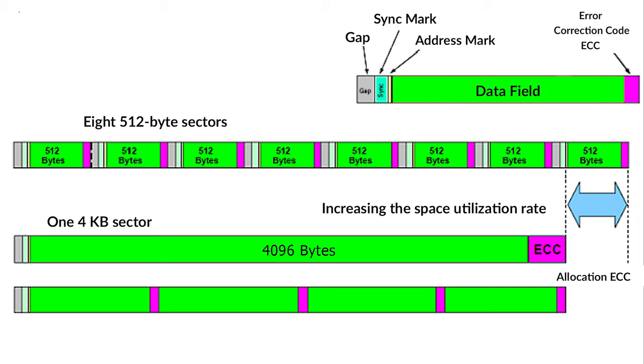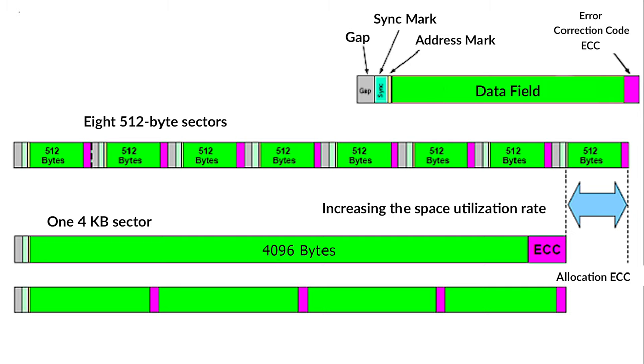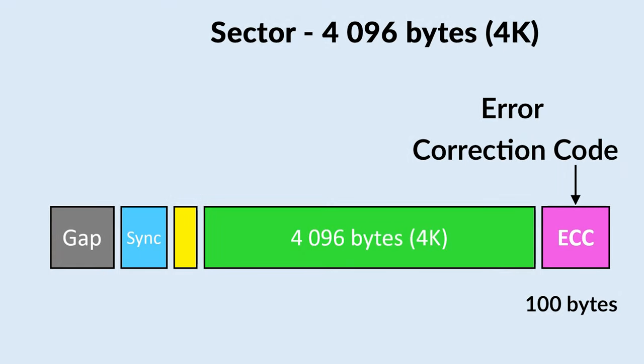In addition, larger sectors strengthen the integration of error-correction algorithms, which can help maintain data integrity at higher storage densities. In 4K sectors, the space allocated for error correction code has been expanded from 50 to 100 bytes, providing a long-awaited increase in error-correction effectiveness and resilience to surface defects. All in all, the combined profit from a more effective new format and improved error correction makes the transition to 4KB sectors quite feasible. The main task for hard disk manufacturers now is to ensure that the transition allows users to gain more performance with as little side effects as possible.